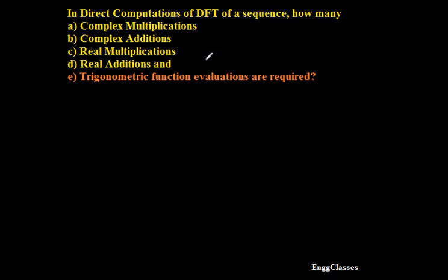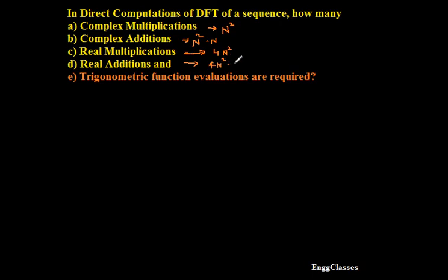In the previous two lectures we already proved how many complex multiplications are needed — we got N² complex multiplications — and we proved there are N²-N complex additions. We also proved there are 4N² real multiplications, and finally 4N²-2N real additions.